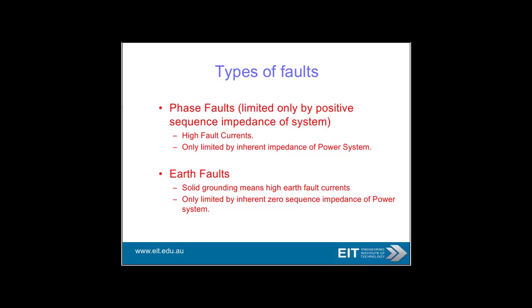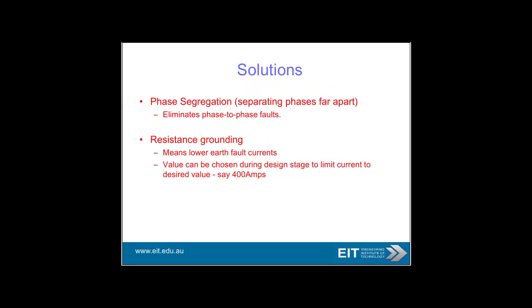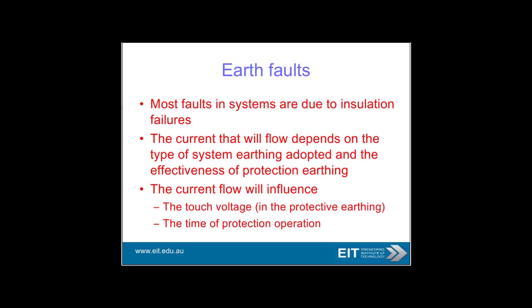Types of faults are phase faults and earth faults. The consequences of heavy fault currents include long outage times. Heavy currents in earth faults give rise to high touch potentials, which are dangerous. Large fault currents are more hazardous in igniting gases. Potential solutions include phase segregation — keeping separate phases far apart — and resistance grounding to lower earth fault currents.